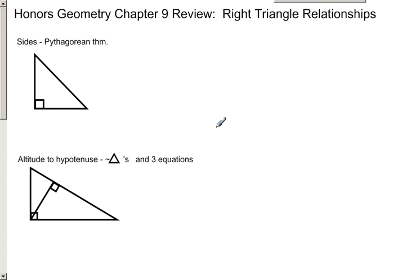One of the first relationships we discussed in Chapter 9 was the relationships of the sides of the right triangle, known as the Pythagorean Theorem.